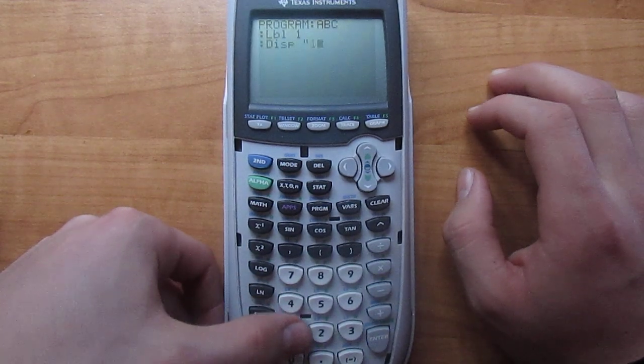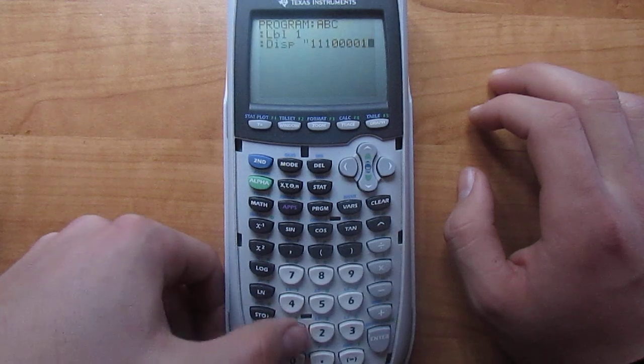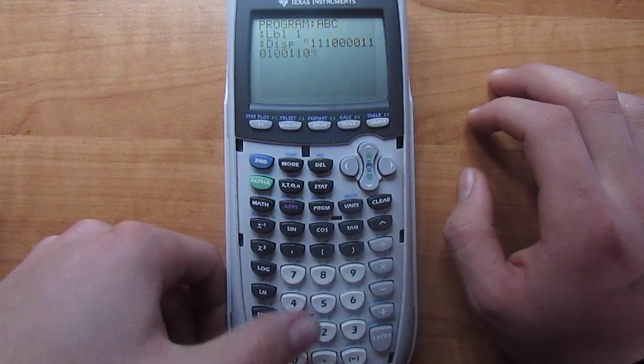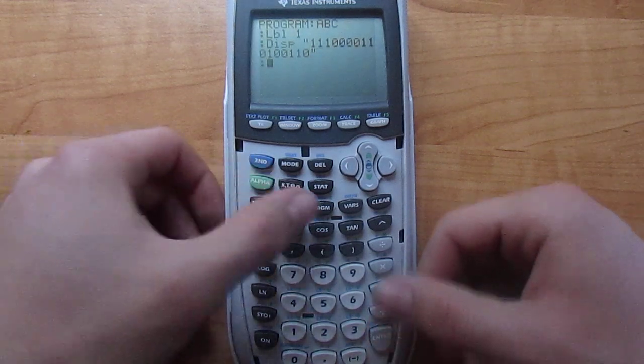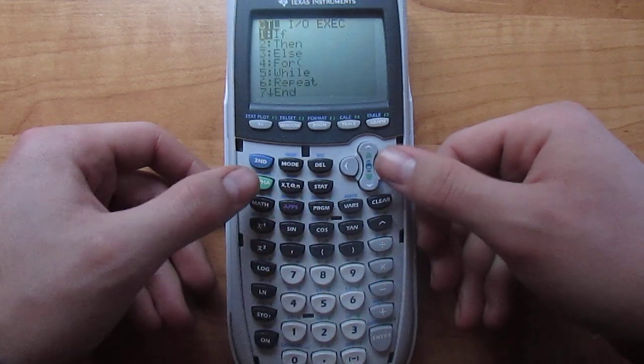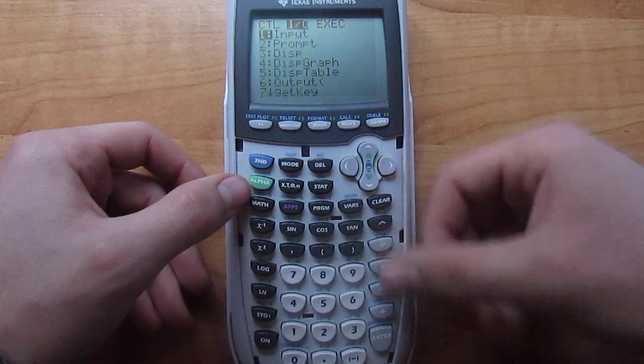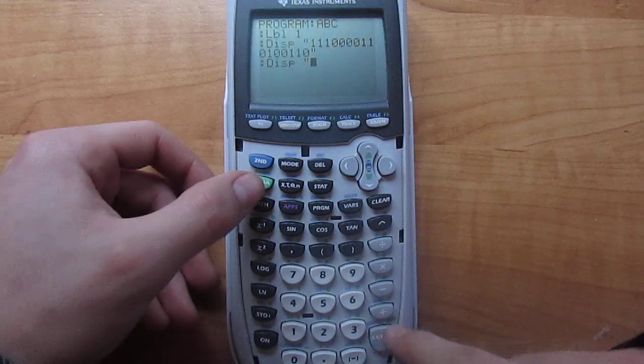It doesn't matter what order, because you want them to be kind of random. Then hit alpha plus again, then hit enter and do the same thing two more times. Program, right, 3, alpha plus.